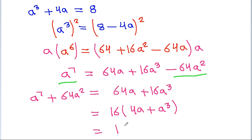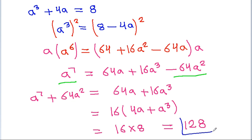So, it will be 16 into 8, that is equal to 128. So, the value of a to the power 7 minus 64a squared is 128.